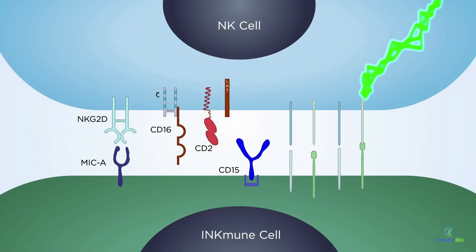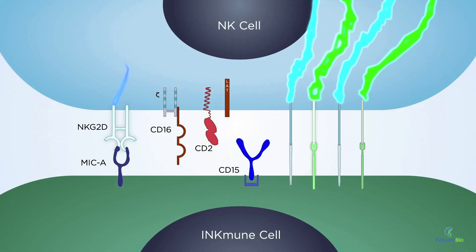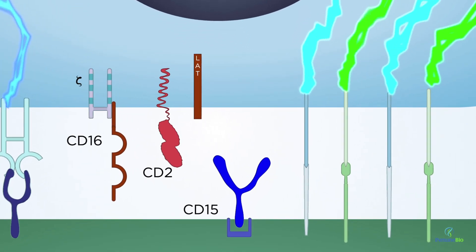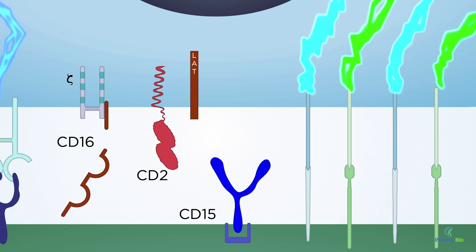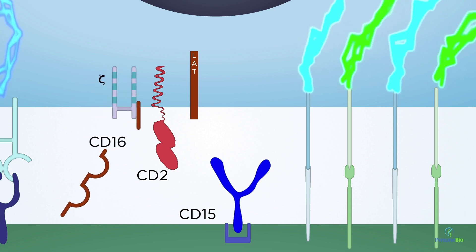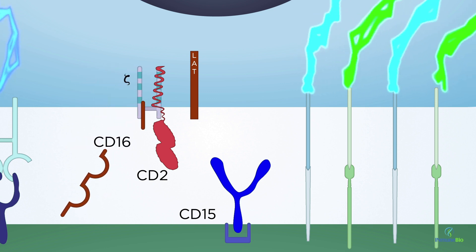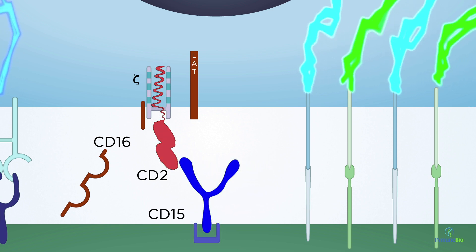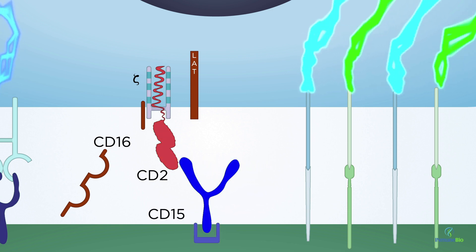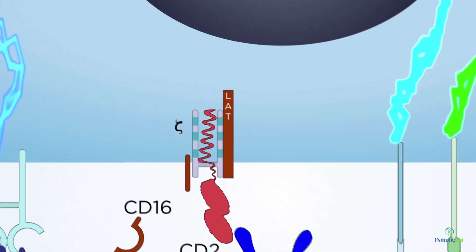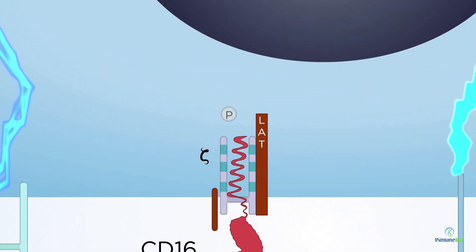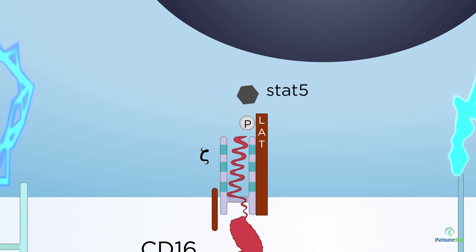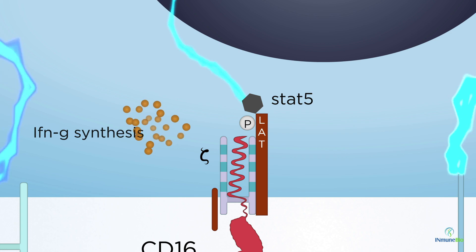Inkmune cells bind to NK cells via multiple different receptors, one of which is CD16. In the cell synapse, CD16 is shed from the NK cell surface and CD3Z is released to bind to the intracellular domain of CD2. The CD2 receptor on the NK cell binds to CD15 on the Inkmune cell, causing sequential phosphorylation of CD3Z, LAT, and STAT5, leading to gamma interferon synthesis and NK activation.